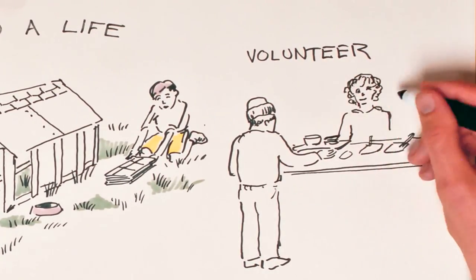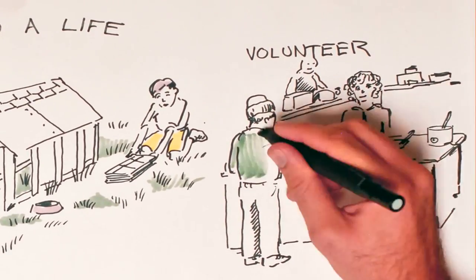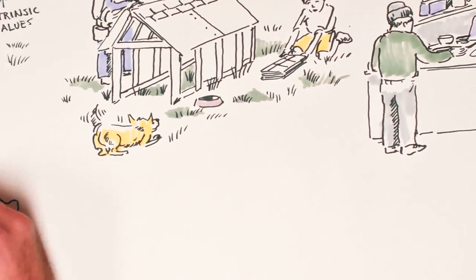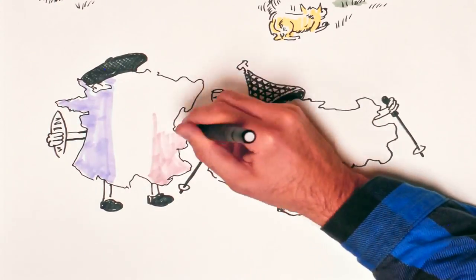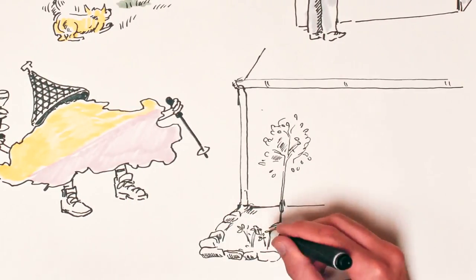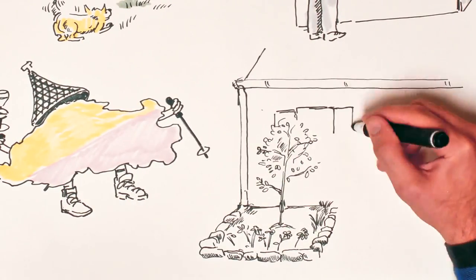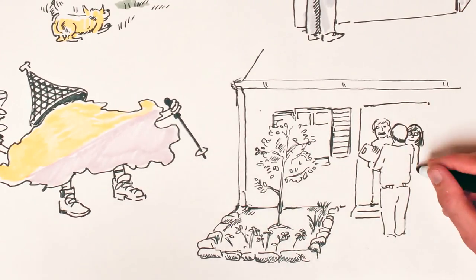But again, changing our lifestyles is not enough. We also need to advocate for policies that promote intrinsic values. For example, countries like France and Bhutan have recognized that they can't only focus on GDP and other measures of economic growth. Now they are starting to regularly assess citizens' well-being and sense of connection to their communities so as to develop policies that truly encourage these intrinsic values.